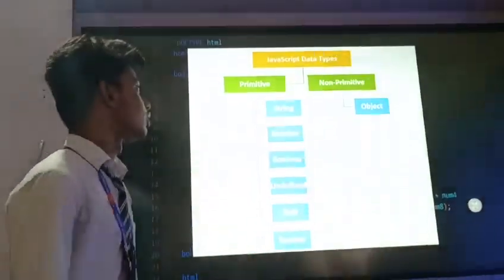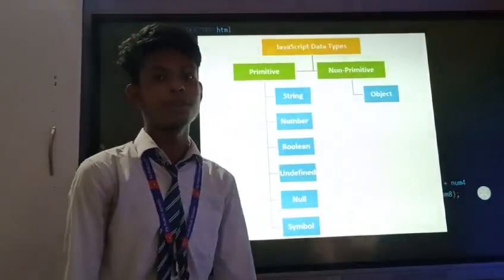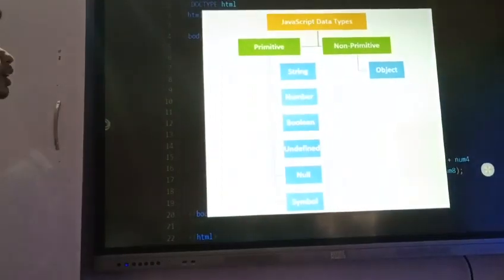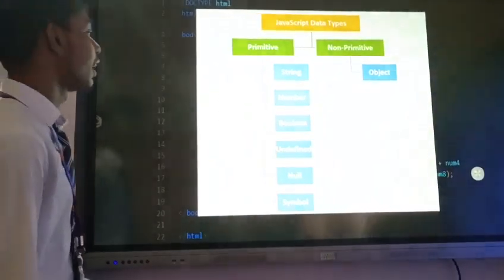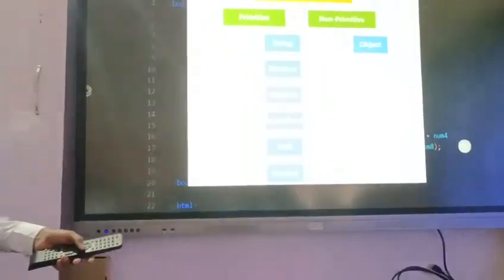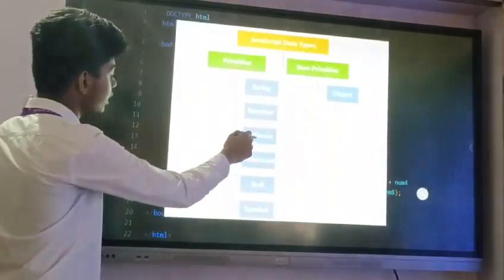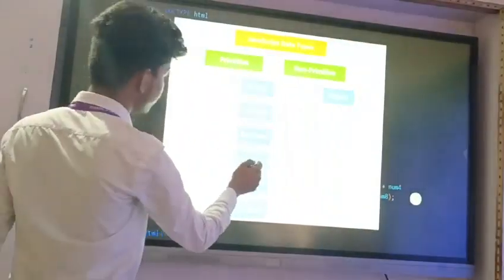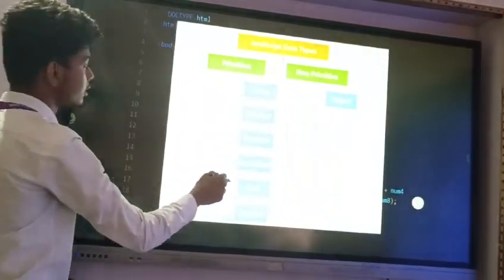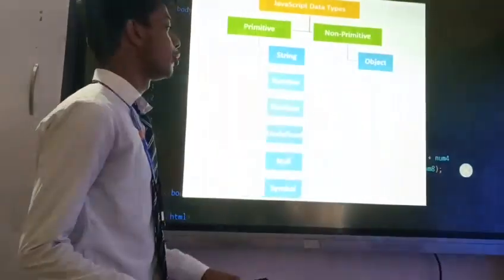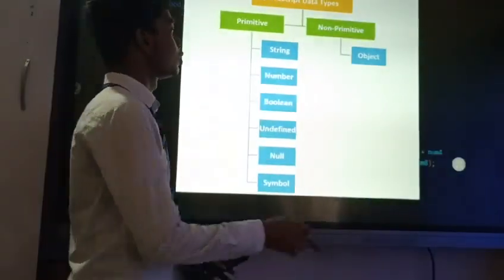Now JavaScript data types. JavaScript data types are of two types. One is primitive, another one is non-primitive. In primitive, there are six types. First one is string, second one is number, third one is boolean, fourth one is undefined, fifth one is null, and sixth one is symbol. And in non-primitive, there is only object.